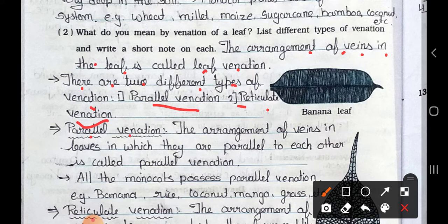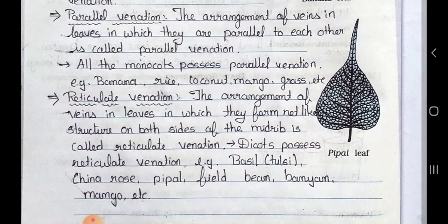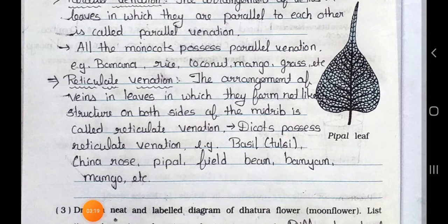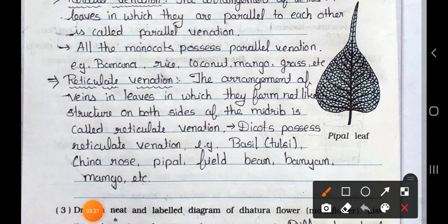Parallel venation. The arrangement of veins in the leaves in which they are parallel to each other is called parallel venation. And all the monocot plants possess parallel venations. Example, banana, rice, coconut, mango, grass, etc.